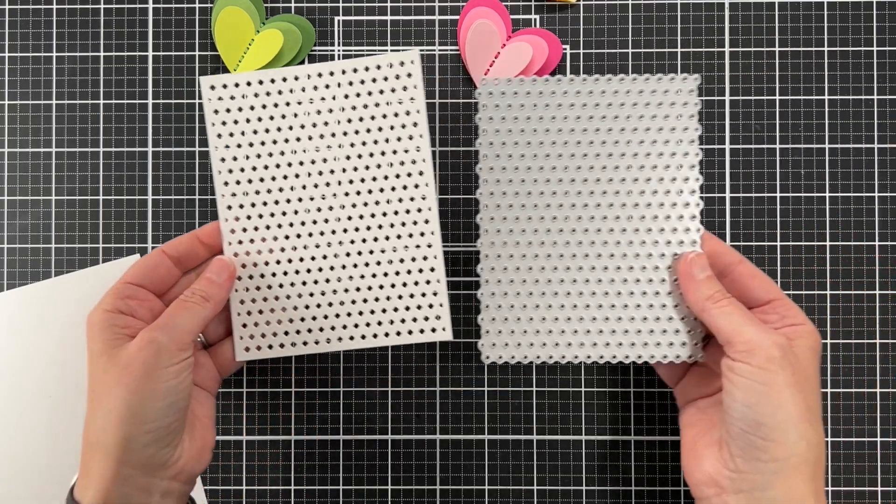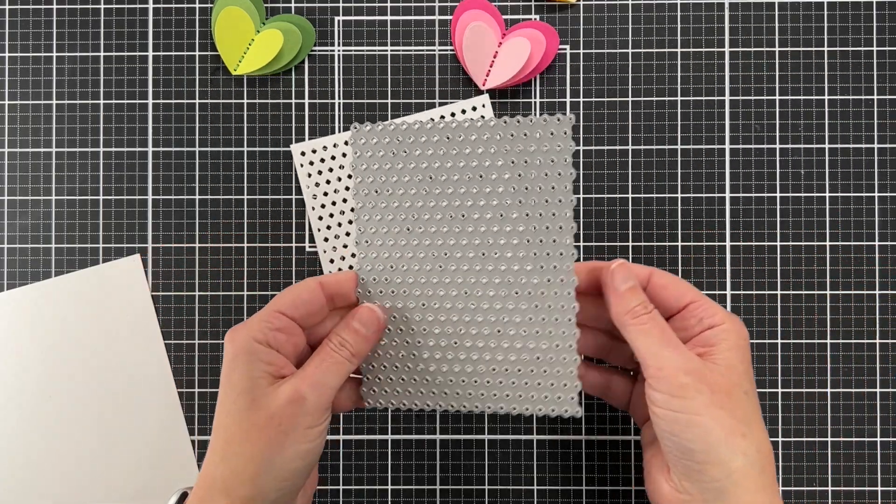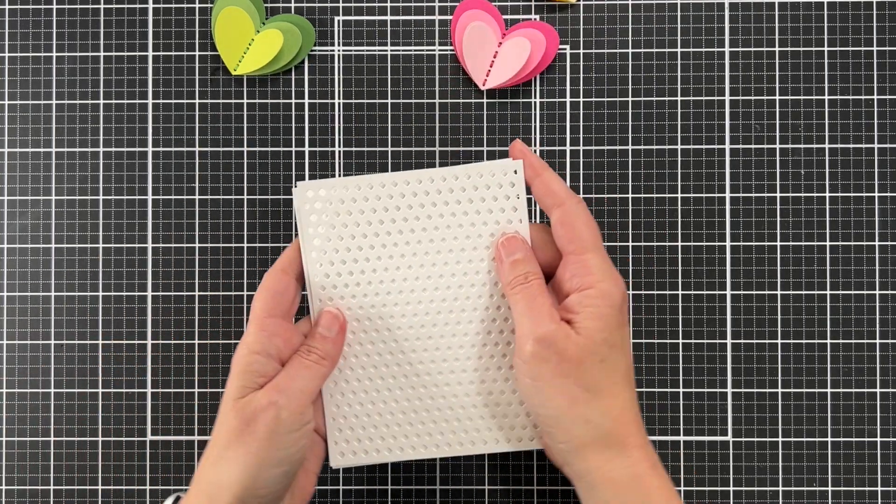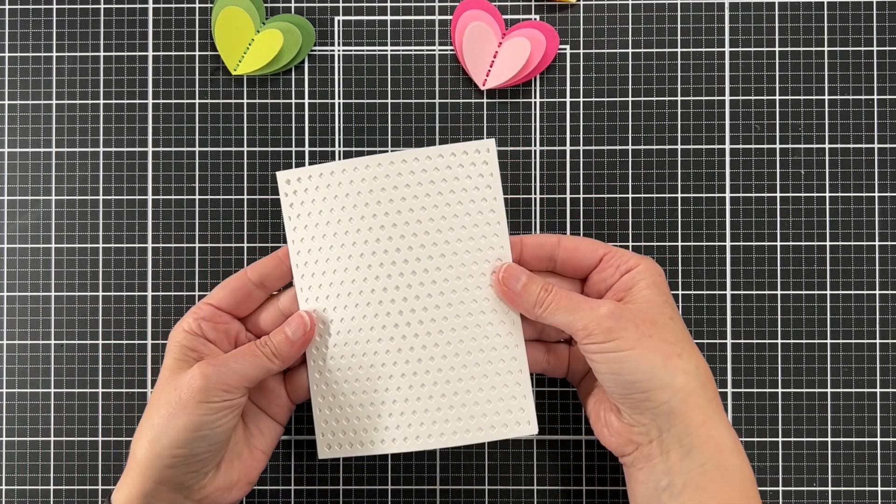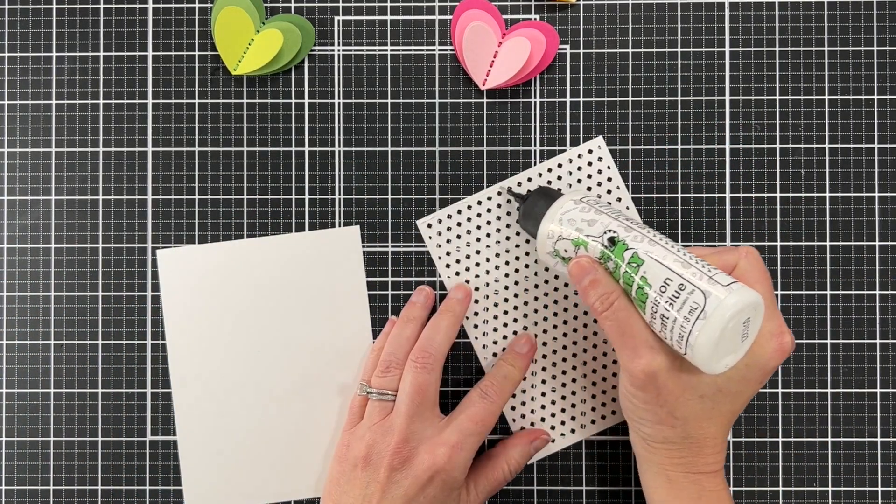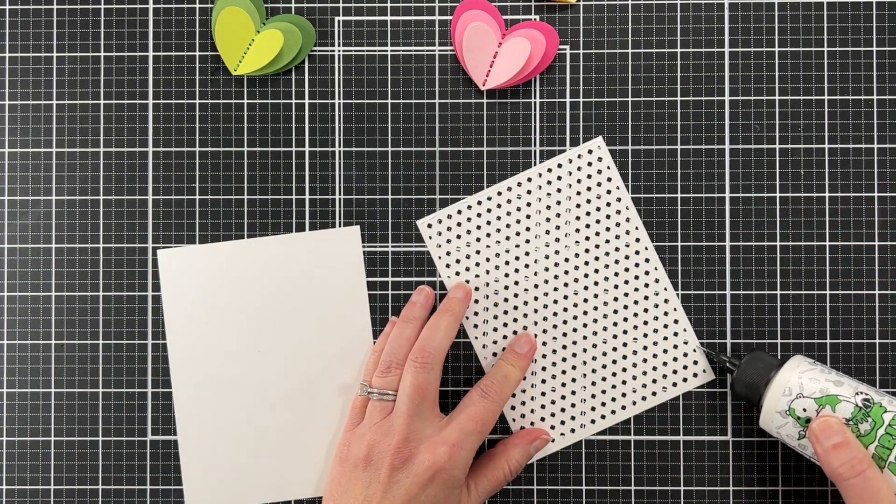To create my card base, I'm going to use the Tiny Diamonds die. This is a cover plate and I love this cover plate. This just creates the perfect amount of texture in the background and I think it's perfect for any occasion. I'm going with a tone-on-tone look today, so I'm just doing white on white.